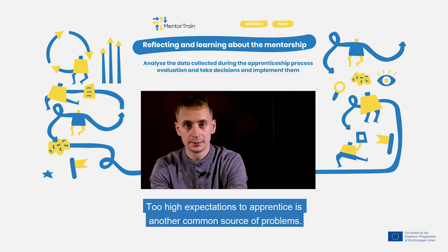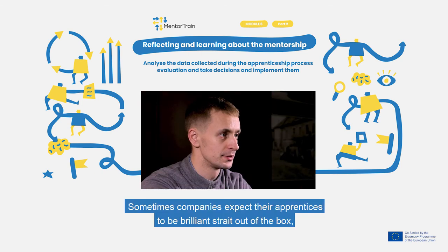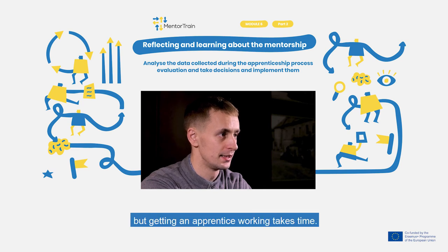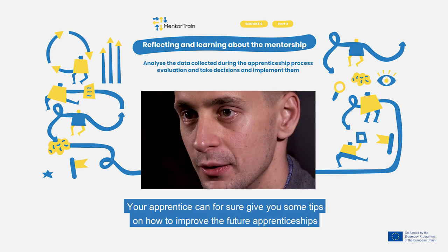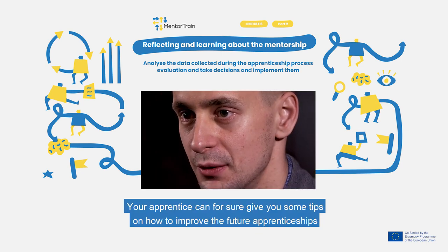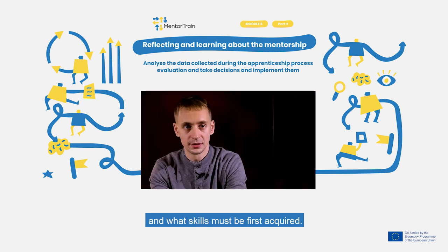Too high expectations of the apprentice is another common source of problems. Sometimes companies expect their apprentices to be brilliant straight out of the box, but getting an apprentice working takes time. Your apprentice can certainly give you tips on how to improve future apprenticeships and what skills must be first acquired.